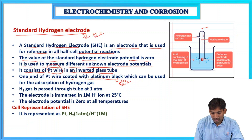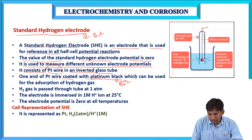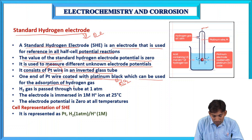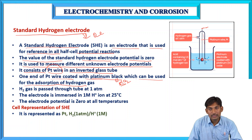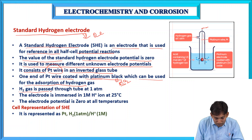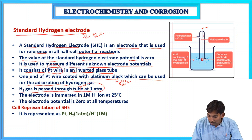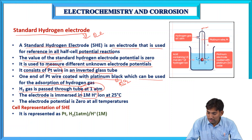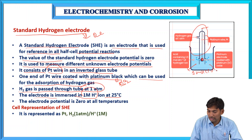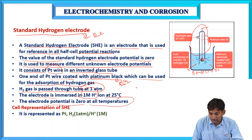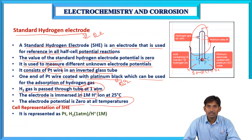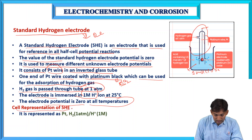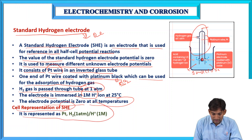One end of the platinum wire is coated with platinum black, which is used for the absorption of hydrogen gas. H₂ gas is passed through the tube at one atmosphere. The electrode is immersed in one molar H⁺ ions at 25 degrees Celsius in one molar HCl concentration as the electrolyte. The electrode potential is zero at all temperatures. This is the cell representation for the standard hydrogen electrode.